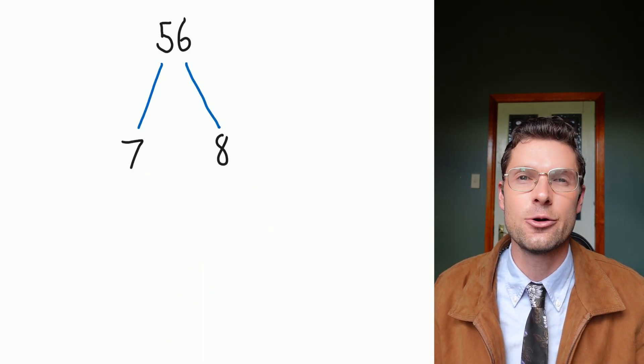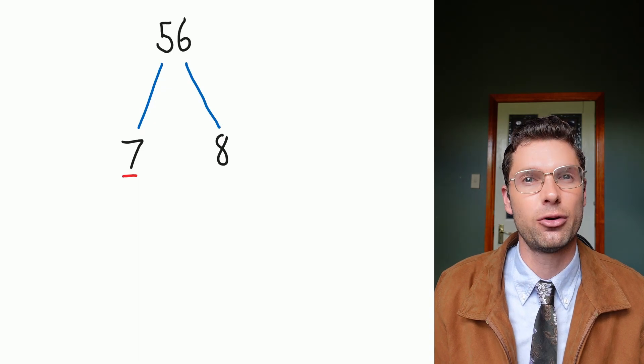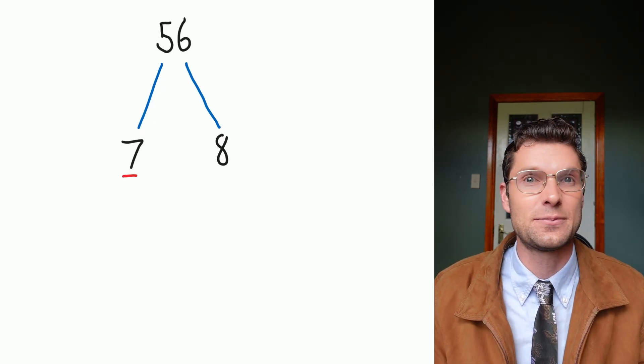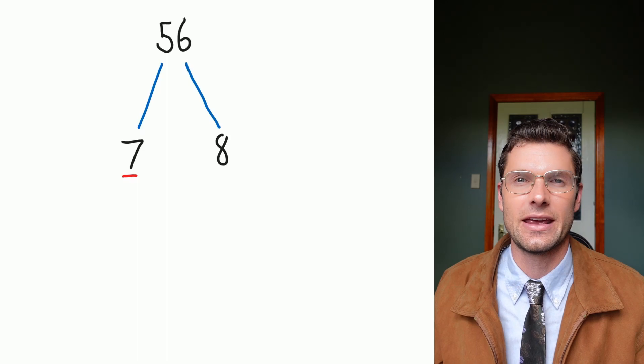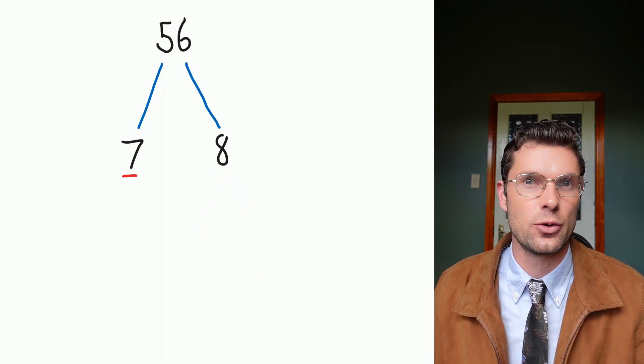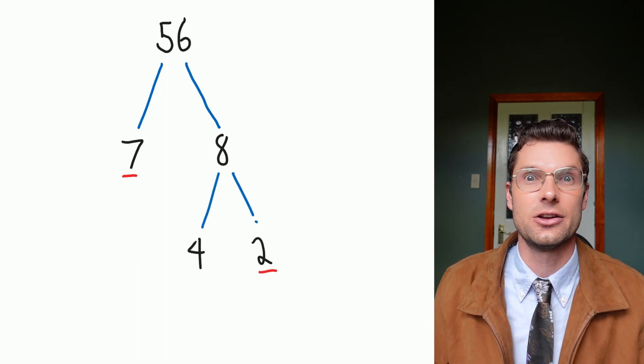For this last example, we've got 56. 7 times 8 is equal to 56. 7 is a prime number, so this side is absolutely finished. And now I've got to break this 8 up again. 8 breaks up into 2 and 4. That 4 breaks up into 2 and 2.